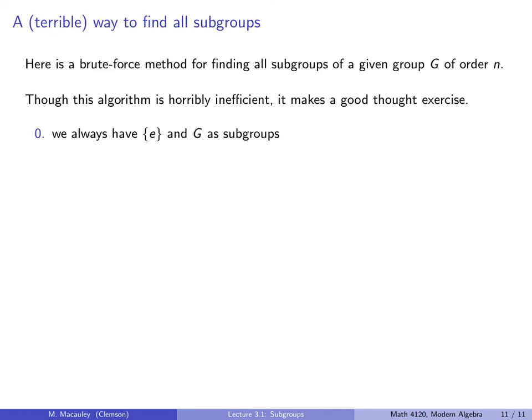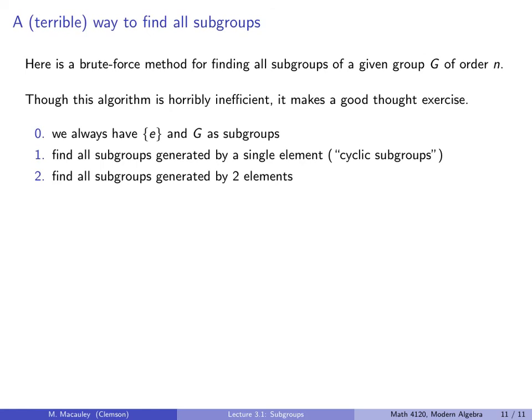Okay, so we will conclude with a terrible way to find all subgroups. This is a brute force method for finding all subgroups of a given group G of order N. This algorithm is horribly inefficient. It makes for a good thought exercise. The first step, or the zeroth step, is that we always have the trivial subgroup and the entire group as subgroups. Then the first step is to find all subgroups generated by a single element. Then find all subgroups generated by two elements. And we can keep going on, eventually finding all subgroups generated by N minus one elements.